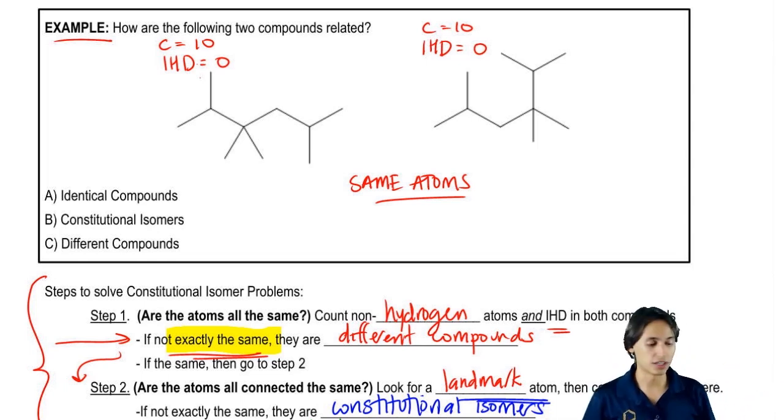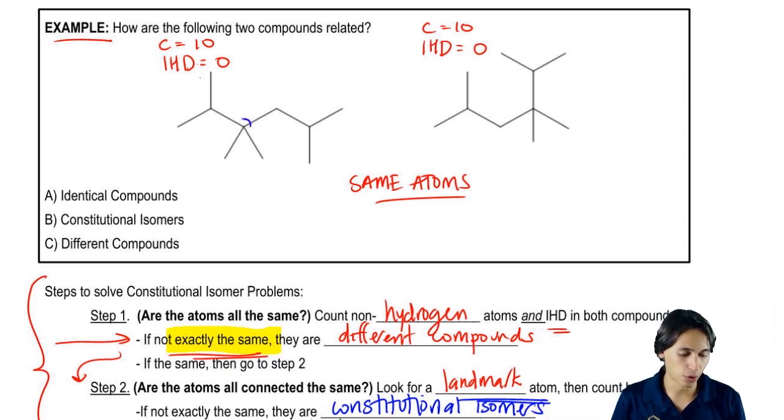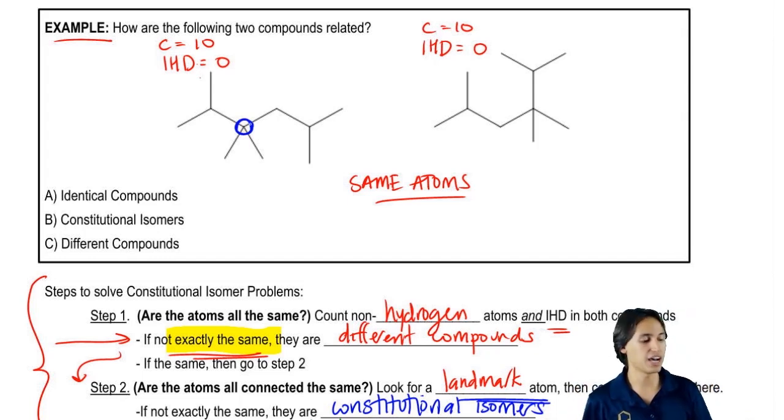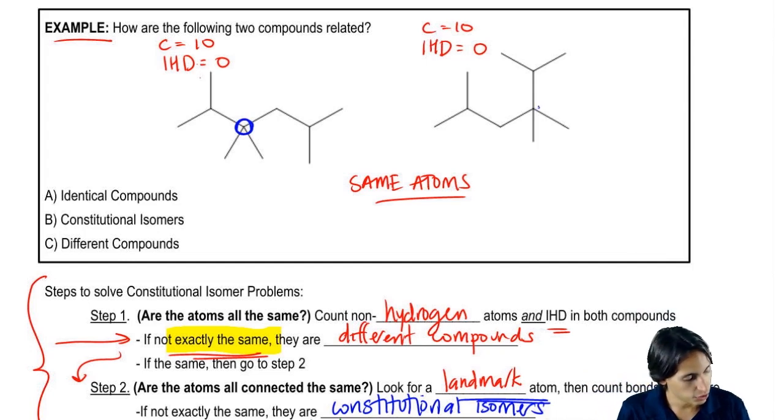What I would choose here is I would choose the atom that has four bonds on it because notice that I have only one carbon that has four bonds on this entire thing. If I can locate that one on both of these, then I could compare what are the four things that are attached. So over here, if I'm looking for the atom that has four bonds, it would be right here.